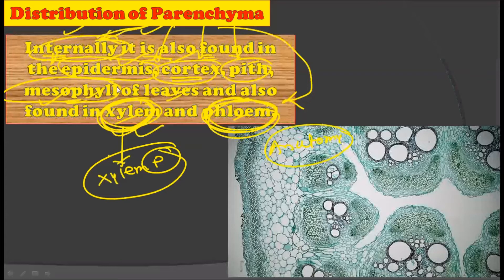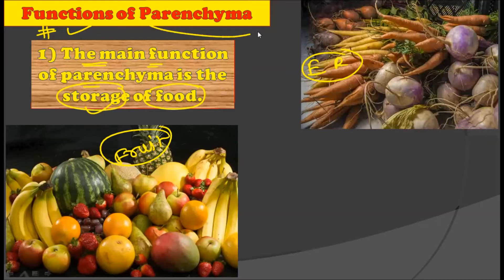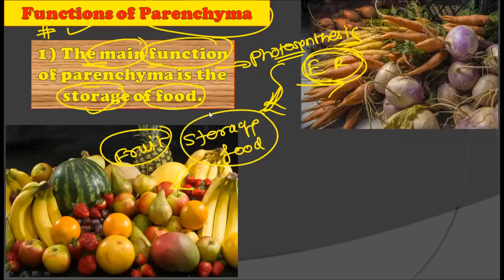Now let's learn about the functions of parenchyma. The main function of parenchyma is the storage of food. As discussed, the majority of edible fruits and roots are made up of parenchyma cells. In the process of photosynthesis, plants prepare their own food using sunlight, CO₂, and water, and this photosynthetic product is stored in the edible fruits and roots, which are mainly made up of parenchyma tissue. That is why storage of food is considered the main function.